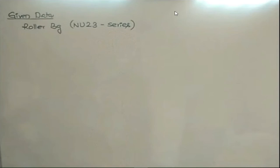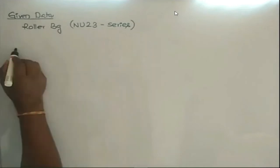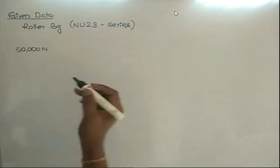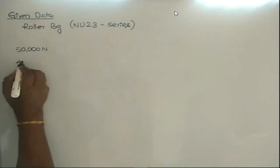First you write down the given data. It is a roller bearing of NU23 series. First load is 50,000 newtons, second load is 40,000 newtons, and what about the third load?